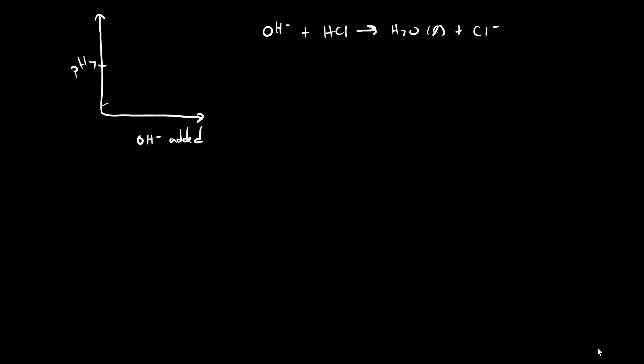So we start acidic, we slowly increase the pH until we reach our equivalence point, where we see a sharp inflection that crosses through pH seven. The equivalence point is always right where it crosses a pH of seven. You can calculate the pH of any point along the way using a stoichiometric approach to figure out how much hydrochloric acid has been used and how much remains.